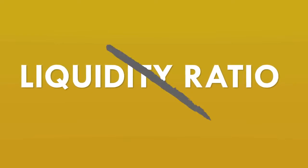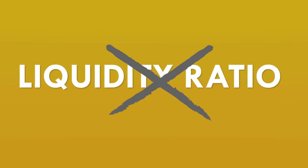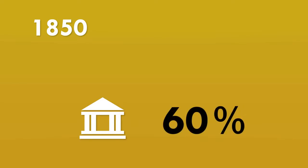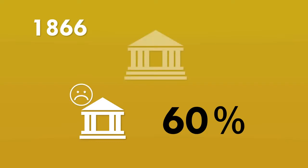We did used to have a liquidity reserve ratio in the UK. From the mid-19th century, banks tended to keep an average of 60% of liquid assets as a proportion of their total liabilities. This was actually a self-imposed reserve requirement — what the banks knew they needed to keep back in order to avoid the risk of a run on the bank. In 1866 there was a banking crisis, and the Bank of England then took on the role of lender of last resort, committing to lend to banks if they ran out of money to make their payments. Once this safety net was in place, banks reduced their liquid reserves to around 30%.